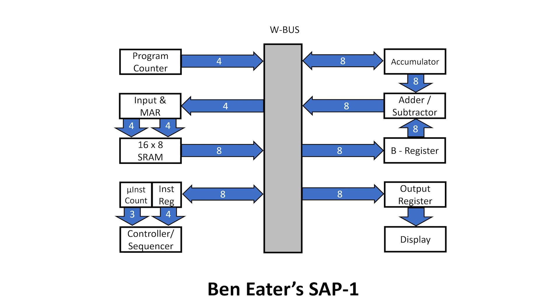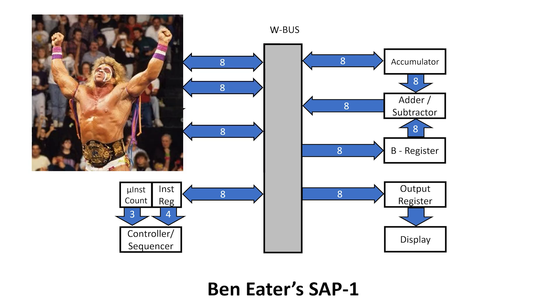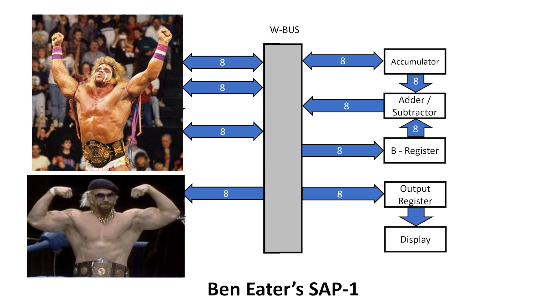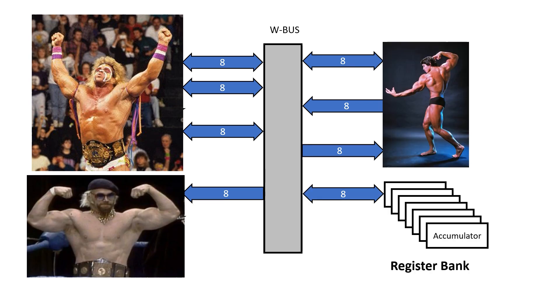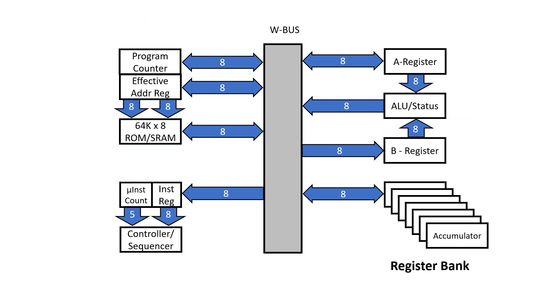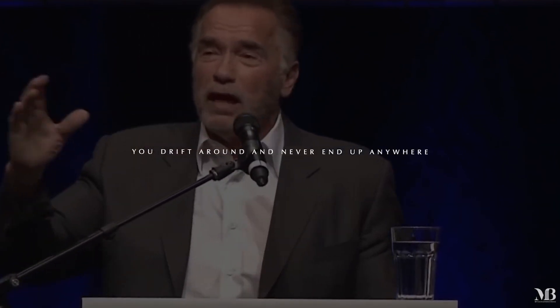At the start, I said I wanted to muscle up the SAP-1 design, and I used the images of the Ultimate Warrior, Jesse the Body Ventura, and Arnold Schwarzenegger, so I thought I'd finish up with some words from Arnold for those interested in building their own CPU but can't quite pull the trigger. You see, if you don't have a vision of where you go and if you don't have a goal of where you go, you drift around and you never end up anywhere.